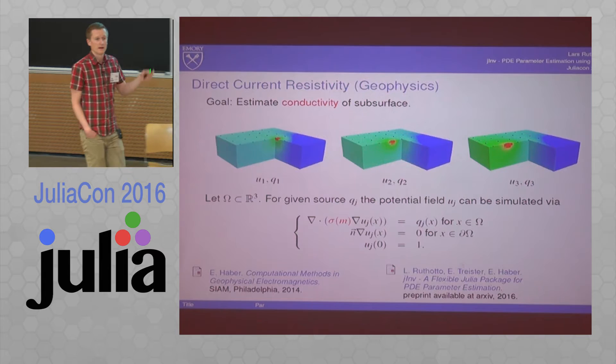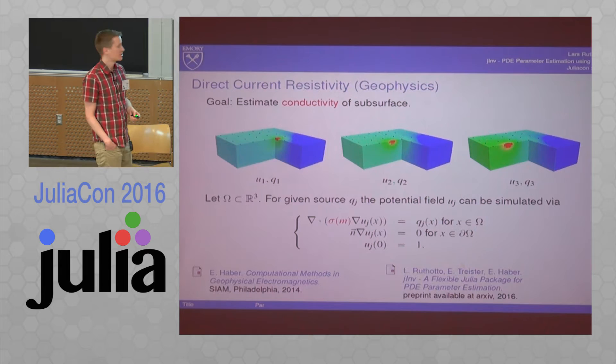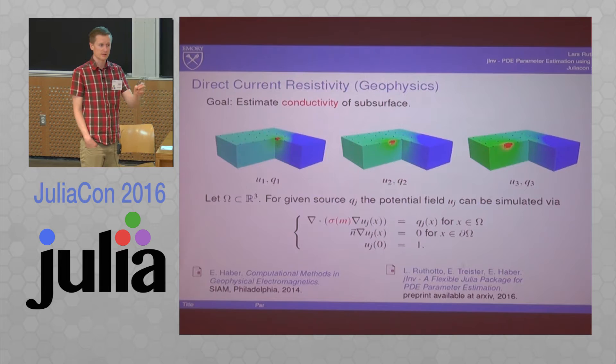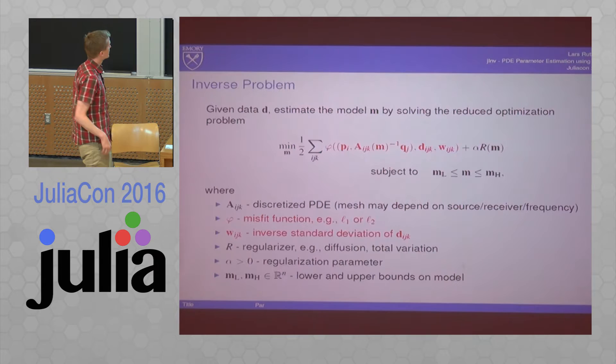In the next slide, it's already gone because I will derive an optimization problem. How do you do that in practice? You would have a guess for your conductivity, you would simulate everything, compare it to your data, and then update your guess. We do that in an optimization framework.